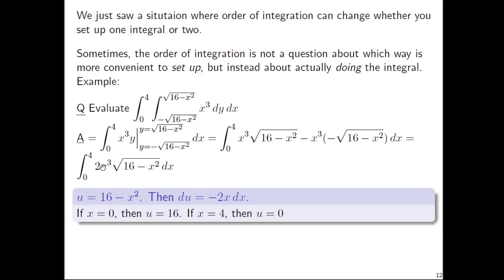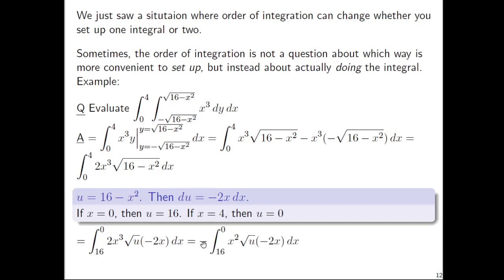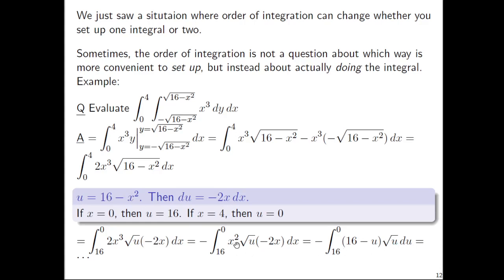Since this is a substitution with a definite integral, we have to update the bounds. When x is 0, u is 16; when x is 4, u is 0. After substitution the integral updates accordingly. You have to substitute in reverse — solve for x², which is 16 - u. At least the integral is all in terms of u, but you have to distribute u to the 1/2 across both the 16 and the minus u. This can work, don't get me wrong, but it is a lot of steps.